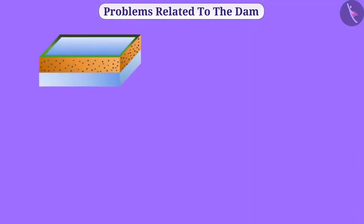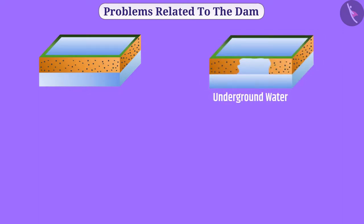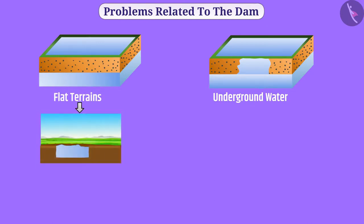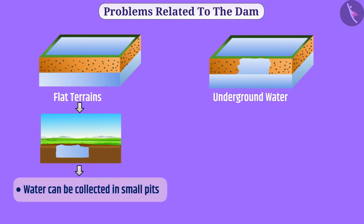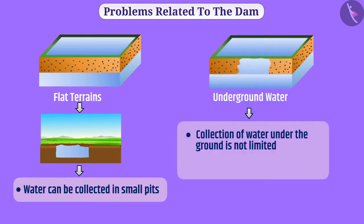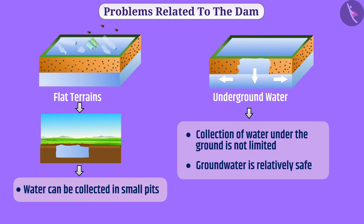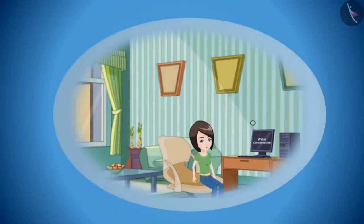There are many benefits to increasing the level of underground water compared to water storage on flat terrains. For example, only a small amount of water can be collected in small pits and stored for only a few months, whereas the amount of water collected underground is not limited — it spreads to the surrounding area and can be stored for a long time. Various problems such as water pollution and mosquito breeding can happen in small pits, while underground water is relatively safe.